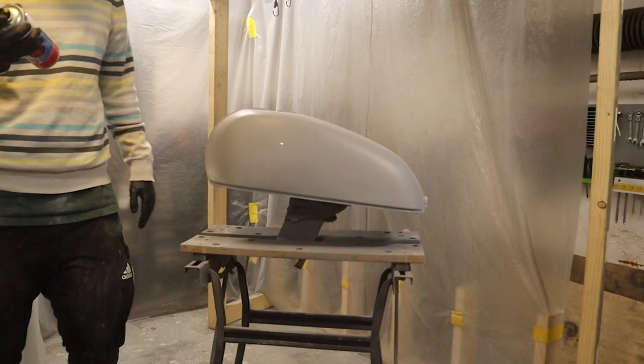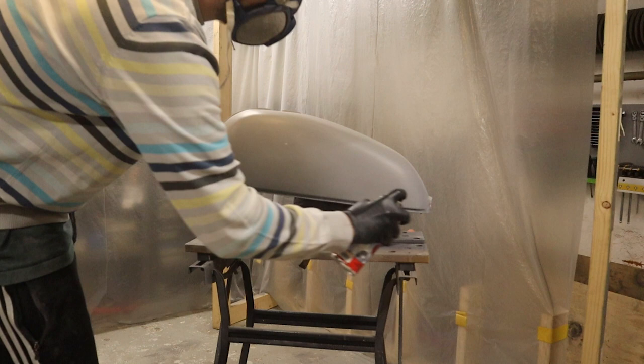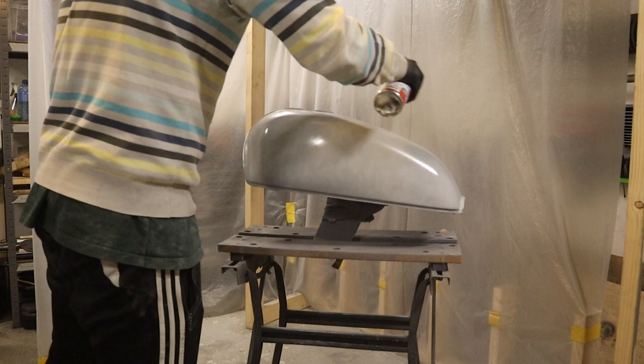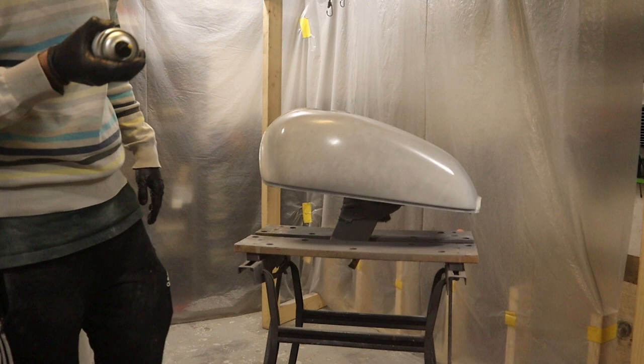After another couple of layers of primer, another round of guide coat and sanding, we're looking much better. I sanded through ever so slightly in two places, so before it's time to move on I gave the tank a few thin layers from a regular spray can just to cover those spots in order to restore some rust protection.